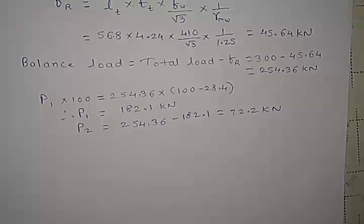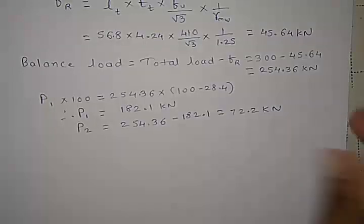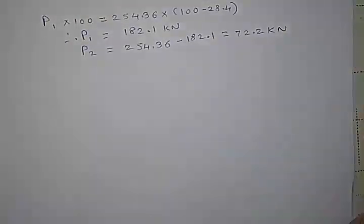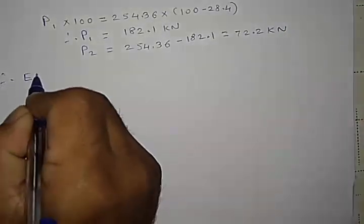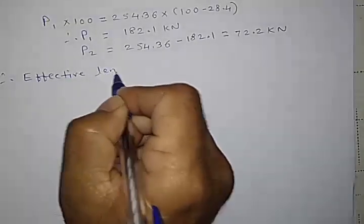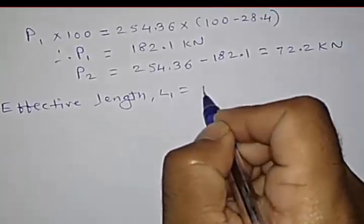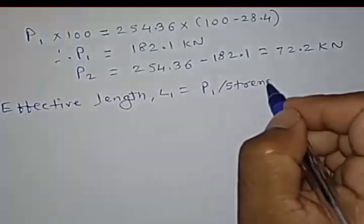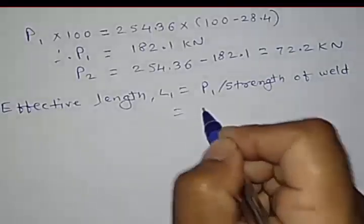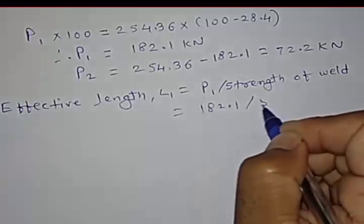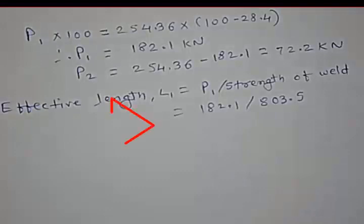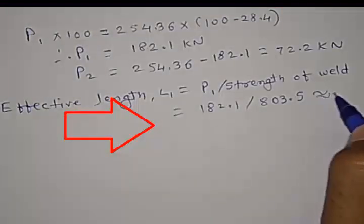Now for this P1 and P2, we just need to calculate what is the effective length. So effective length which is required, L1 will be equal to P1 divided by strength of the weld. So P1 you got 182.1 kN divided by strength, this is already calculated in the earlier video. And you will get this L1 as 230 mm.